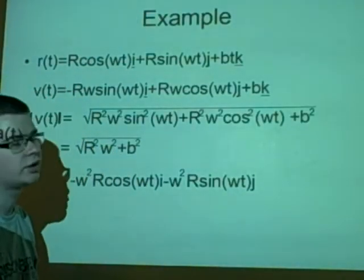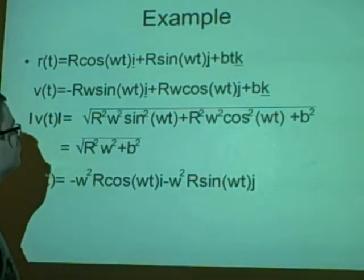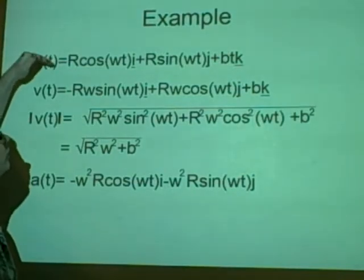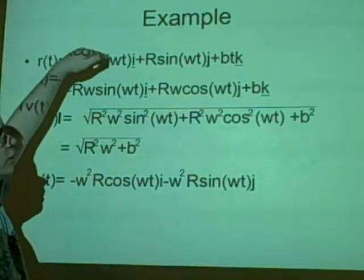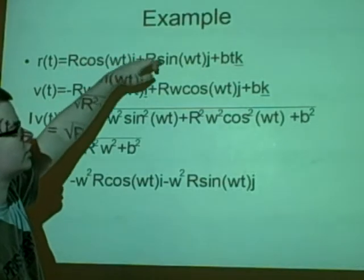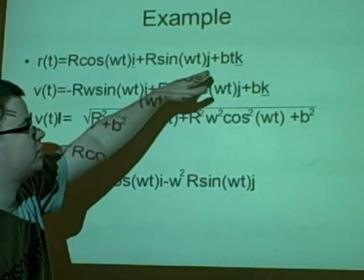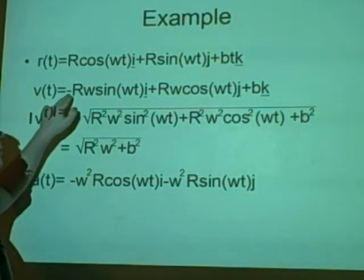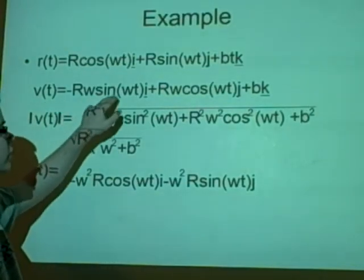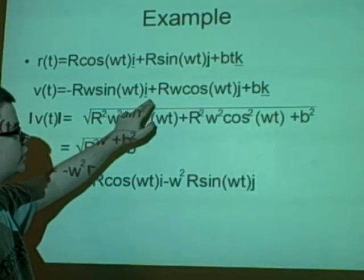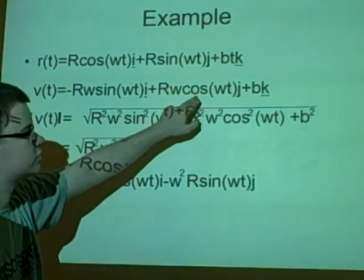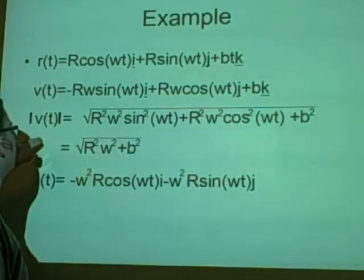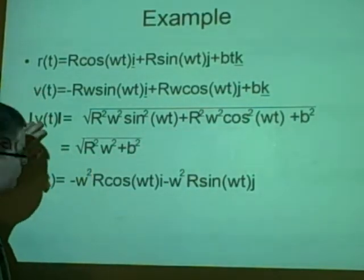This is just a quick example of that in practice. We have our position vector r cosine omega t i plus r sine omega t j plus b t k. To get the velocity we differentiate it, which is minus r omega sine omega t i plus r omega cosine omega t j plus b k.